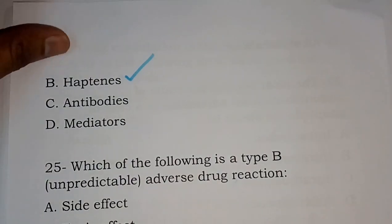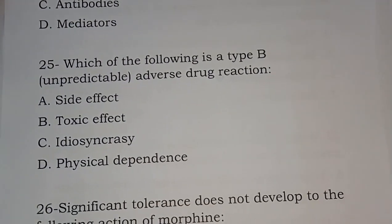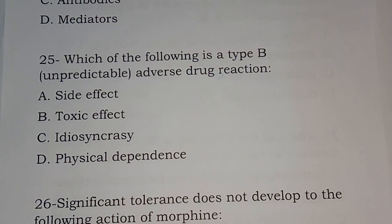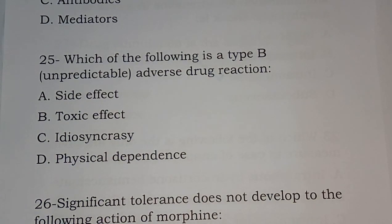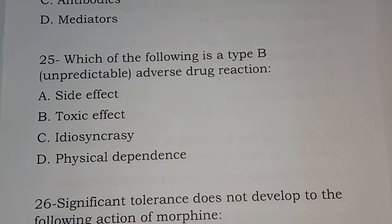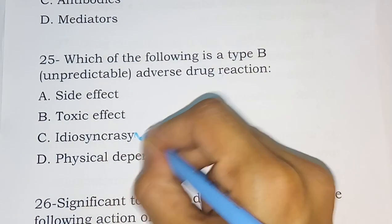Question 25: Which of the following is a type B, that is unpredictable or bizarre, adverse drug reaction? Options are side effect, toxic effect, idiosyncrasy, physical dependence. The correct answer is option C, idiosyncrasy.